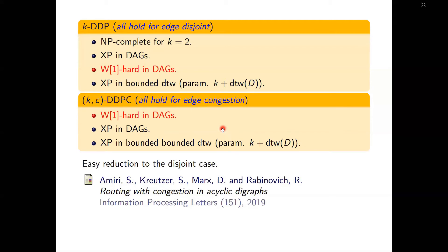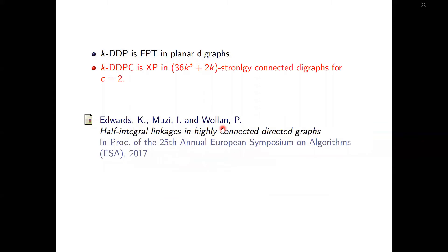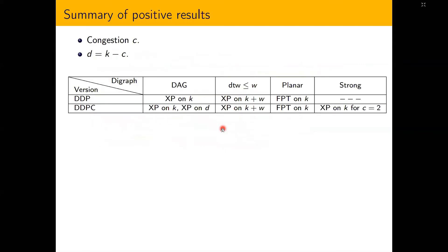Both problems are already W1-hard in k. On positive results, Siddiqui, Marx, and Pilipczuk showed that the directed disjoint path problem is FPT with parameter k in planar digraphs. Edwards, Musi, and Wallen showed that the congested version is XP in highly strongly connected digraphs when the congestion equals 2. Amiri, Kreutzer, and Rabinovich showed that the congested version is XP in the parameter d, where d is the dual parameter of the normal congestion: d equals k minus c, where k is the number of requests and c is the allowed congestion.